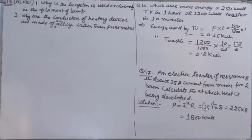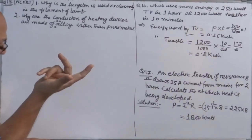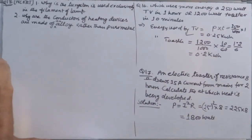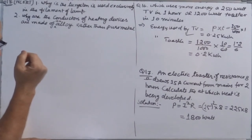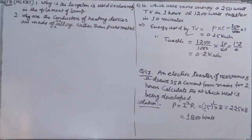Part B: Why are conductors of heating devices — such as heaters and room heaters — made of an alloy rather than a pure metal? Because alloys have higher resistivity than pure metals, and since they have high resistivity, a large amount of heat can be produced.